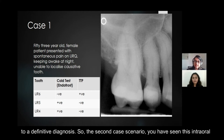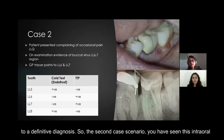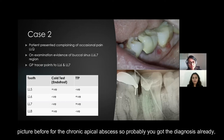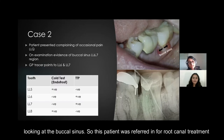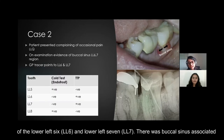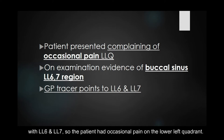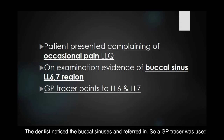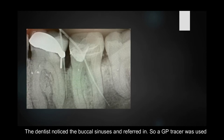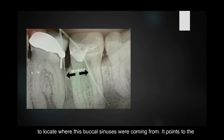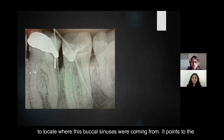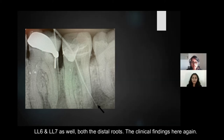The second case scenario — you've seen this intraoral picture before for the chronic apical abscess, so probably you've identified the apical diagnosis already by looking at the buccal sinus. This patient was referred in for root canal treatment of the lower left 6 and lower left 7. There was a buccal sinus associated with both teeth. The patient had occasional pain on the lower left side, and the dentist noticed the buccal sinuses and referred in. A GP tracer was used to locate where the sinus was tracking from, pointing to the lower left 6 and 7, specifically both distal roots.